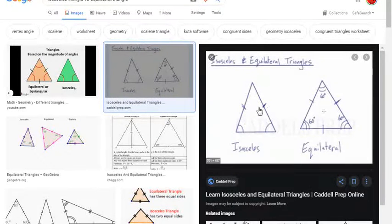All isosceles triangles may not be equilateral triangles, because in equilateral, all the three sides are equal.